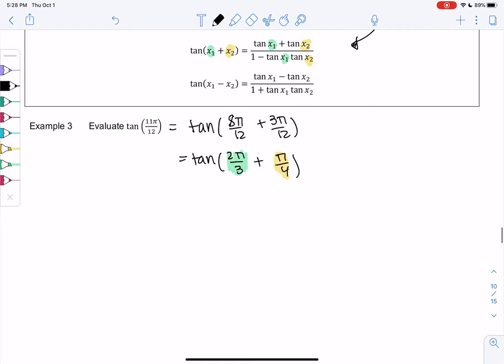Alright, let's plug in and then we'll draw the unit circle. So tangent of 2π over 3 plus tangent of π over 4, all over 1 minus tangent of 2π over 3 times tangent of π over 4. And then we'll find these individual values and combine them.